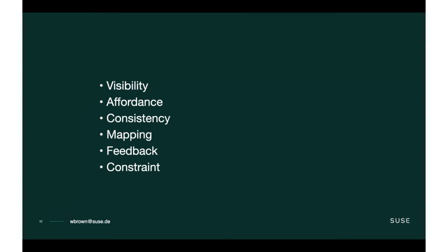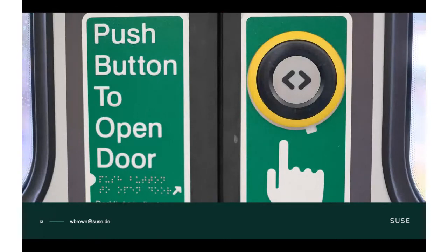The six principles laid out as the basis for how we interact with the world as humans are: visibility, affordance, consistency, mapping, feedback, and constraint. First — visibility. Humans discover interaction elements of an interface by seeing what is possible to interact with. A button may have a contour or colour. A door handle may extend from a surface. This visibility extends beyond just our eyes — for people who may be deaf or blind, there may be a sound emitter or a raised surface detectable by touch.